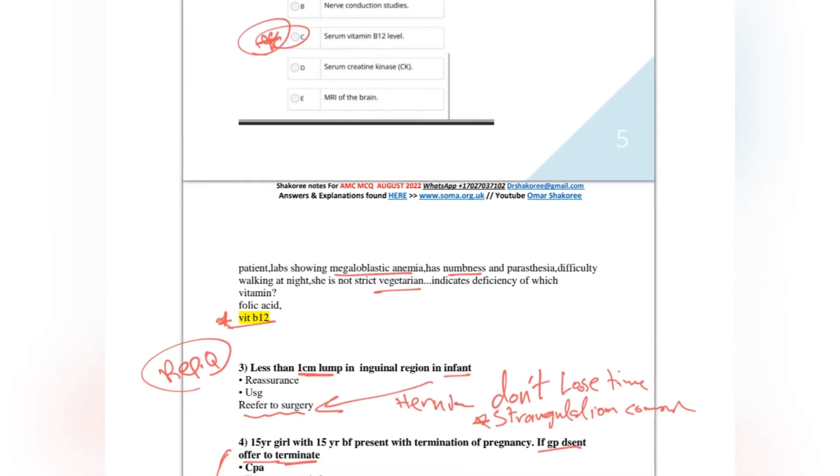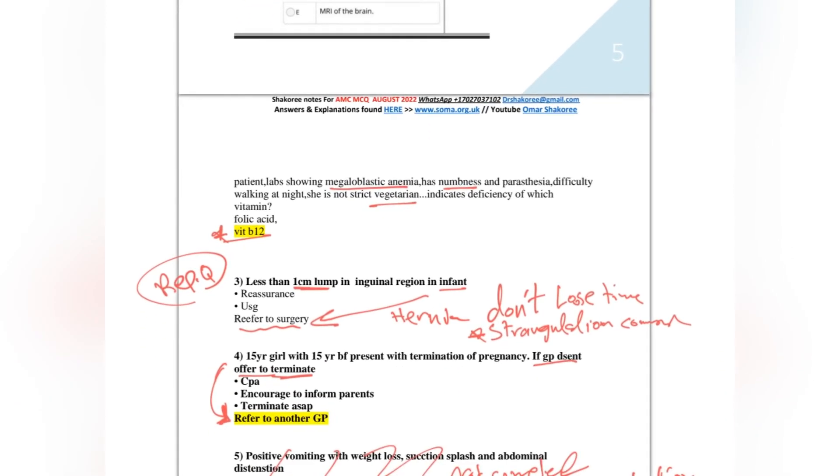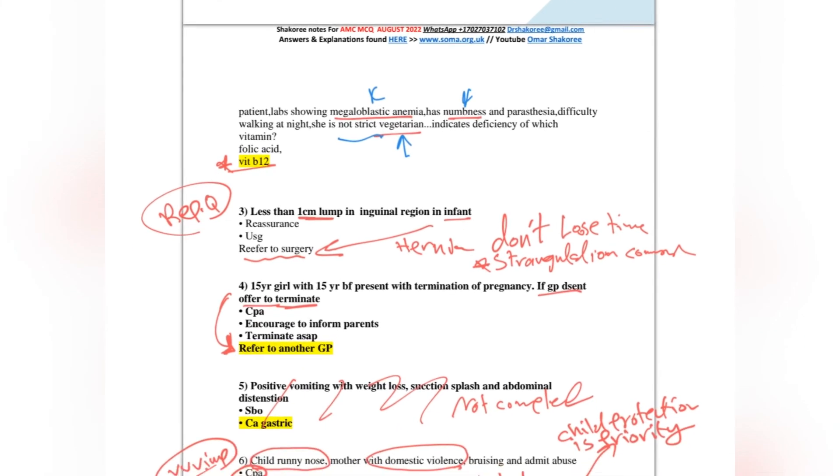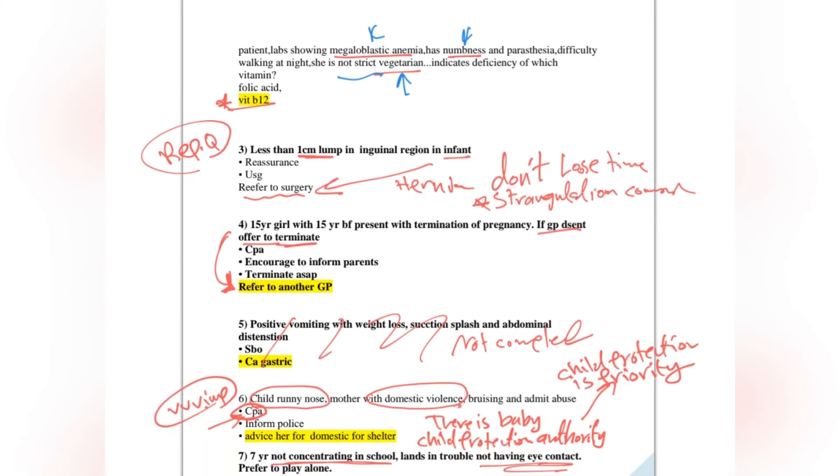Another question about vitamin B12: megaloblastic anemia, numbness in a patient who is not vegetarian, not strict vegetarian. Indicate deficiency of which vitamin? This is also vitamin B12, vitamin B12 deficiency.